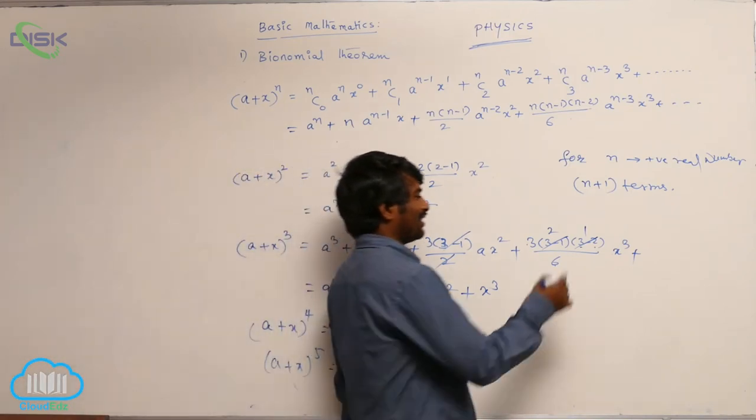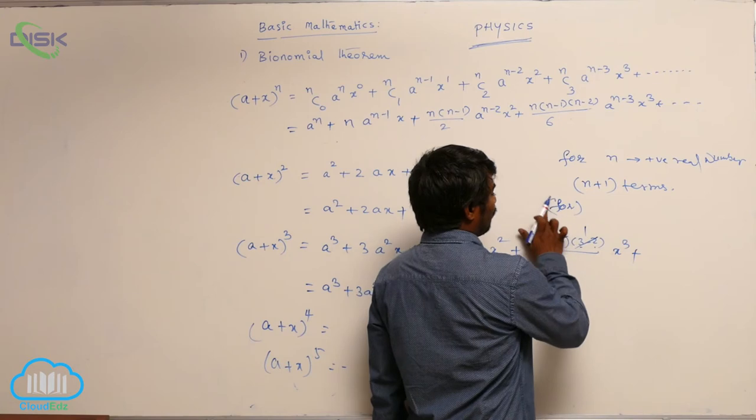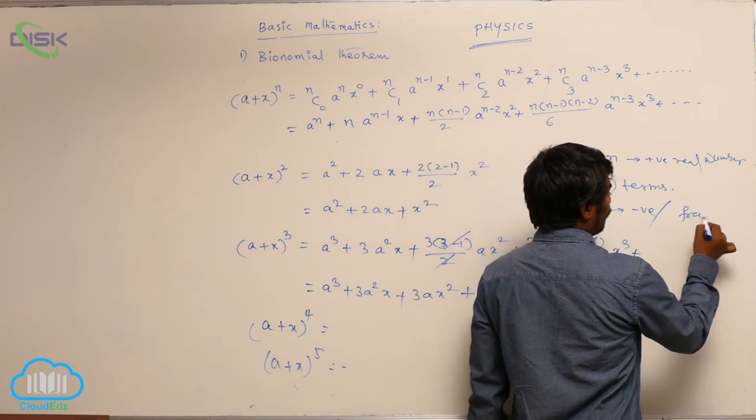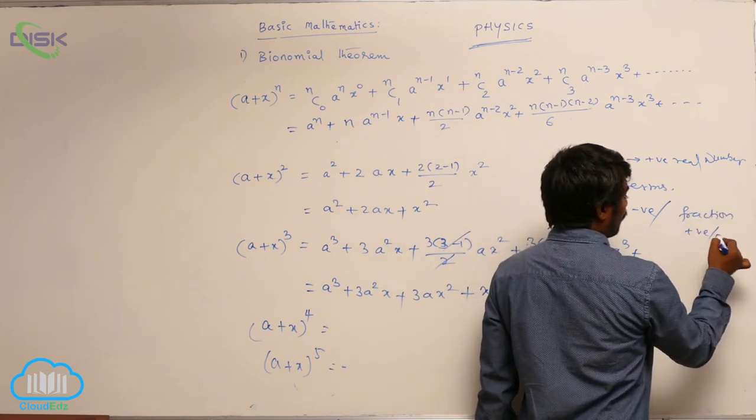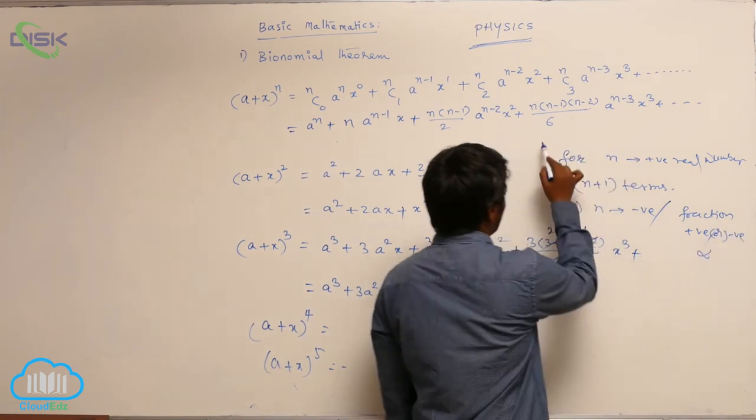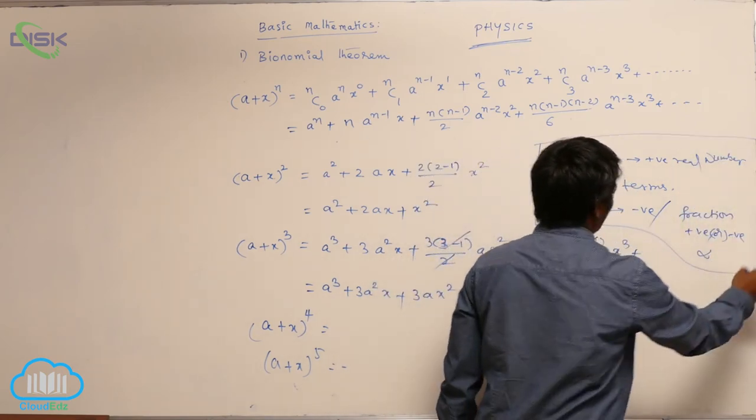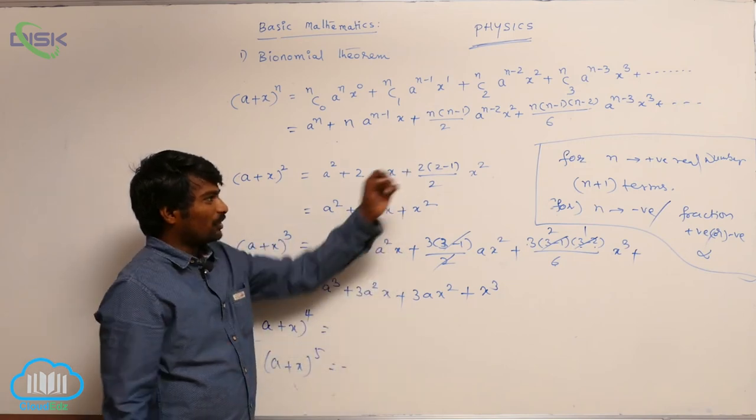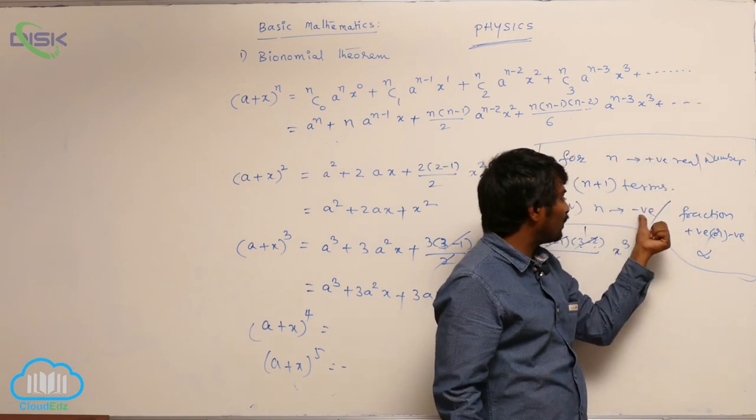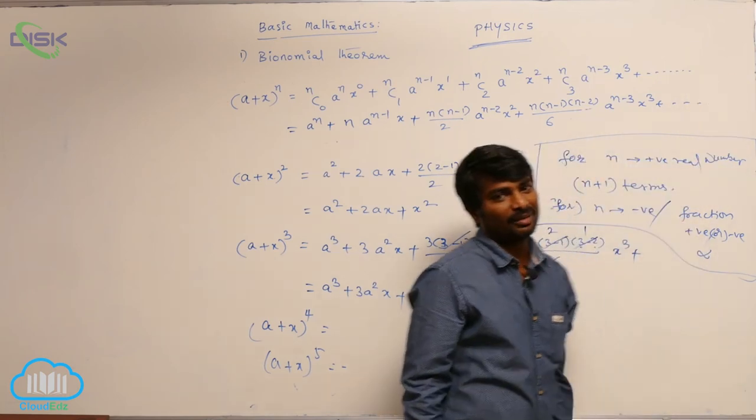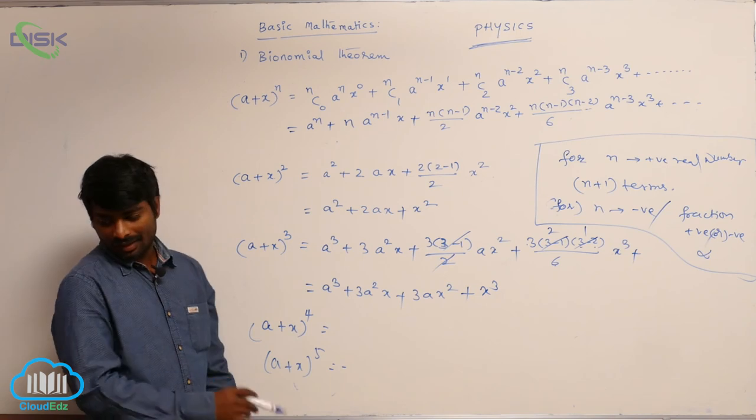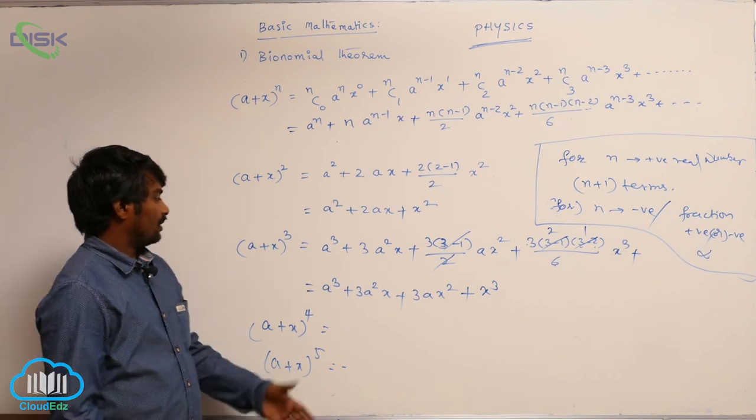And for other values - for n negative or a fraction (fraction may be positive or negative) - you will be getting infinite terms. Very important. Why are we getting infinite terms? Whenever n is a positive integer, we have one term that becomes 0 and the next term also becomes 0. If you take a negative value or fraction value, you do not get any term that becomes 0. That is why you will have infinite terms. Now, let us go for some more expressions.